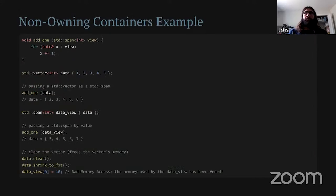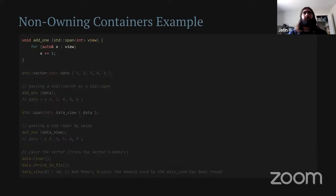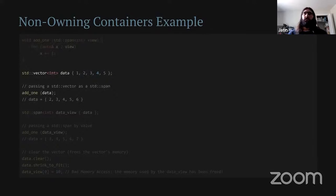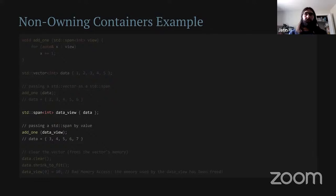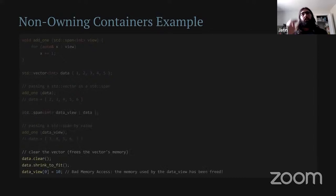Here's a little example of using a span. We have a function that takes a span of integers and wants to add one to all of them. We could have a vector and pass the vector to the function, which will implicitly convert it to a span and do the operation, modifying the data in the vector. We could also explicitly construct a span and pass that. But we need to be careful: if we free all the memory in the vector and then try to do something with the span we had created, we'll get a bad memory access because the memory the span expects is no longer there.